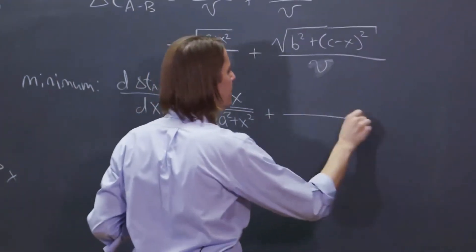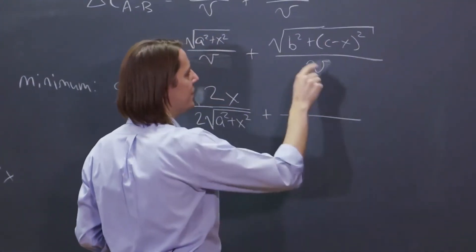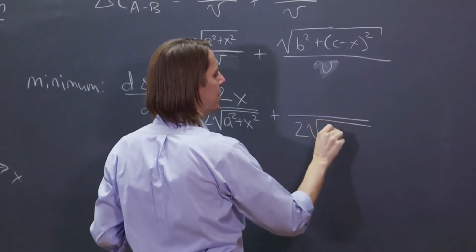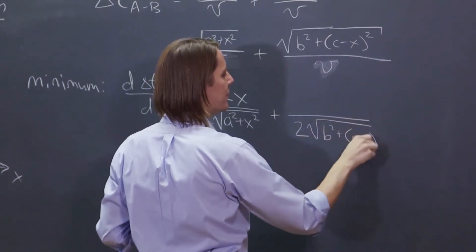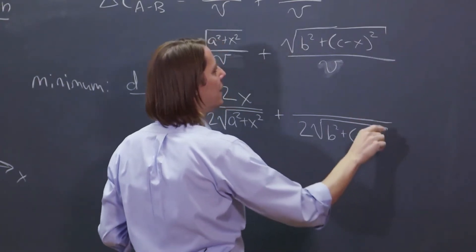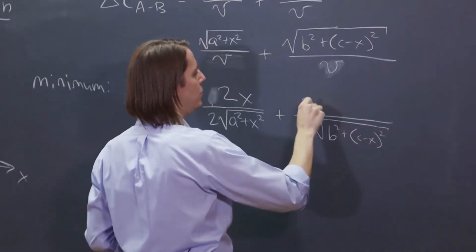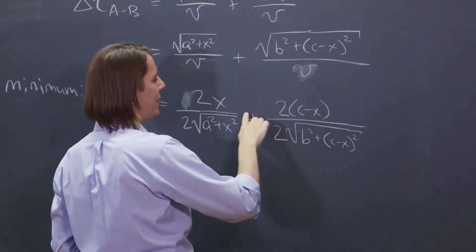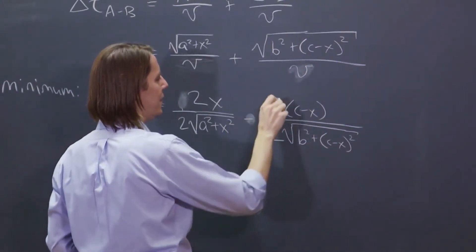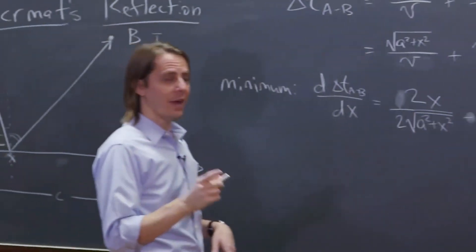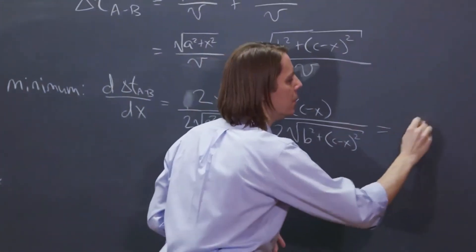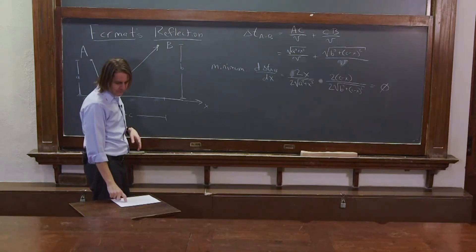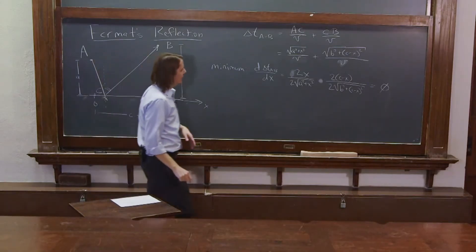And then this one also is a one-half in the bottom, and that thing to the minus one-half, which means that thing at the bottom, C minus X squared. And that leaves a 2C minus X in the top. And then that minus the derivative of that makes this whole thing minus like that. And then that has to be equal to zero since we're looking for a minimum or a maximum.